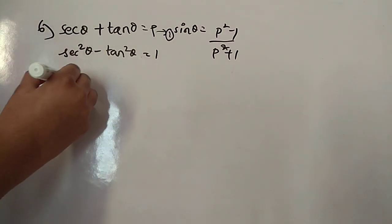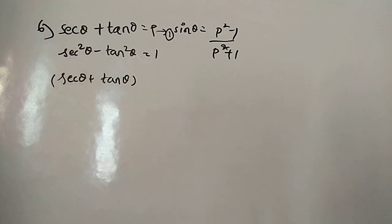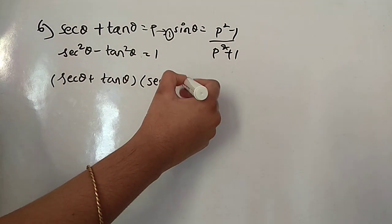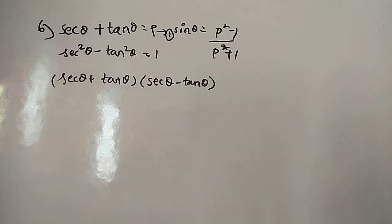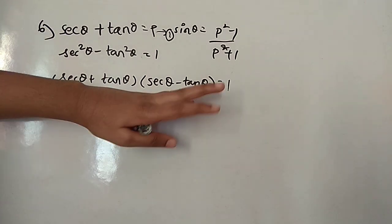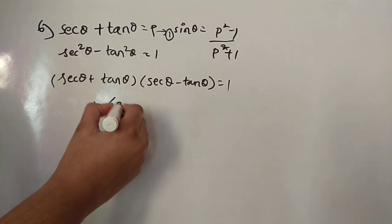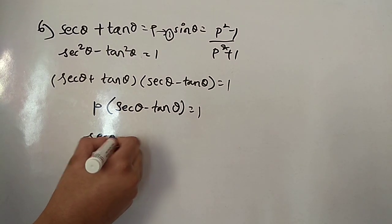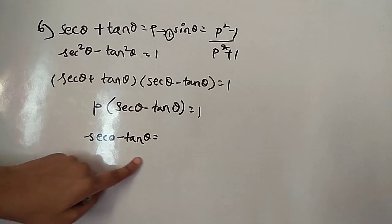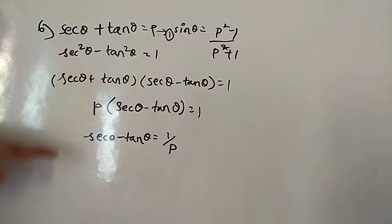Taking the LHS, secant theta plus tan theta multiplied by (secant theta minus tan theta) gives secant squared theta minus tan squared theta, which equals 1. So secant theta plus tan theta equals p (equation 1), and secant theta minus tan theta equals 1 over p (equation 2).